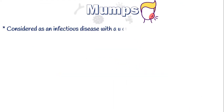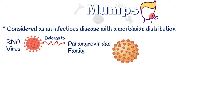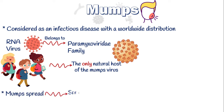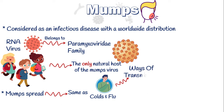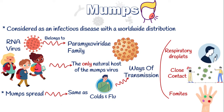Mumps is considered an infectious disease with a worldwide distribution. It is caused by a highly contagious RNA virus which belongs to the Paramyxoviridae family of viruses. We humans are the only natural host of the mumps virus. Mumps is spread in the same way as colds and flu — the virus particles are mainly transmitted through inhalation of respiratory droplets, close contact, or fomites. This is why living in close quarters such as college dormitories enhances mumps spread and can cause sporadic outbreaks.